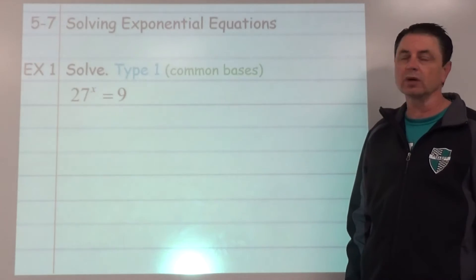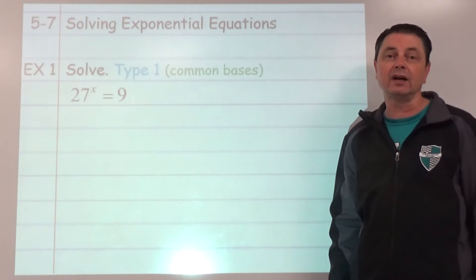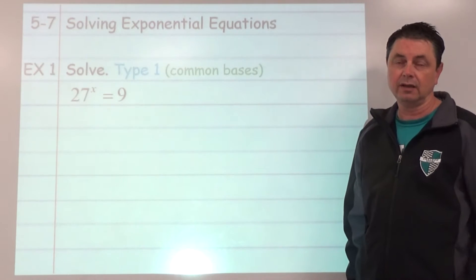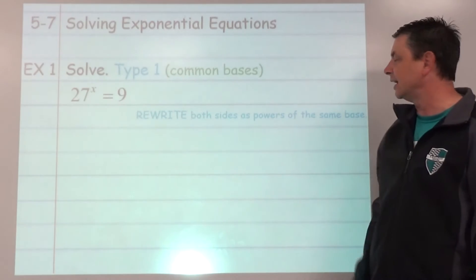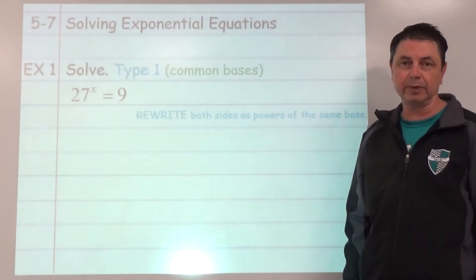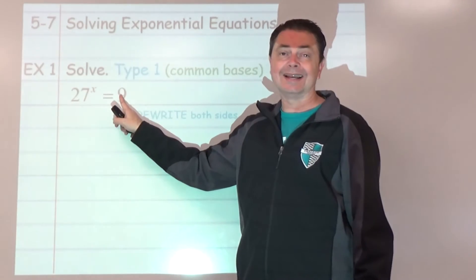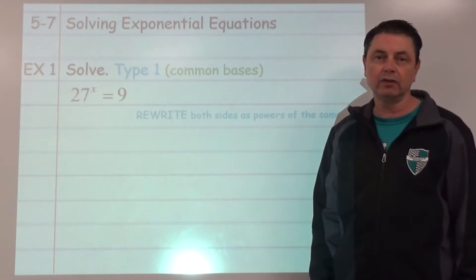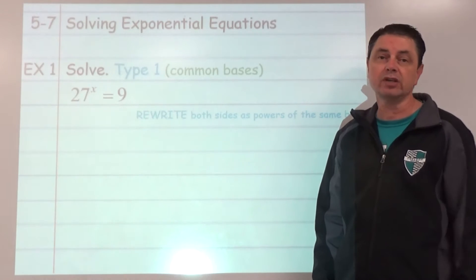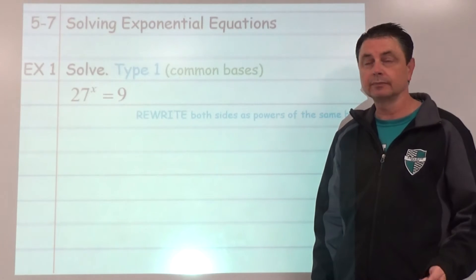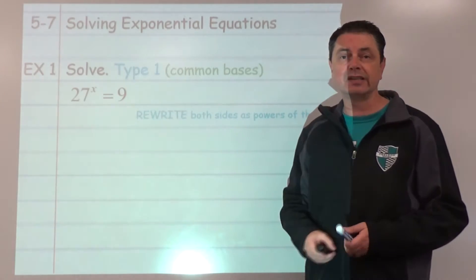There's going to be two types that we're going to solve. This is type one where we're going to identify that we have common bases. Step one is to rewrite both sides as powers of the same base. So 27 and 9 are both powers of what number? The answer is 3. 27 is 3 to the third power, 9 is 3 to the second power.